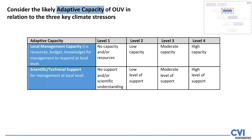As well as local management capacity, we need to think about the scientific and technical support at the local level. At level one, you may have no scientific or technical support, or any scientific understanding of how that climate stressor will impact your values. As you move across to levels two, three, and four, the level of support increases. At level four, you would have good scientific understanding and good technical support to undertake adaptive capacity.